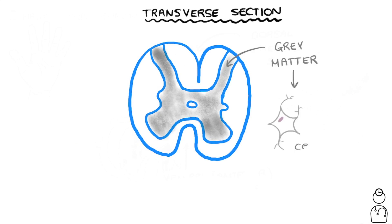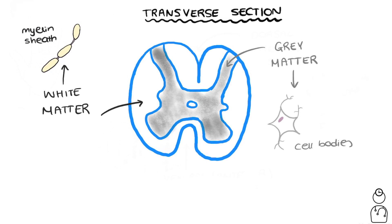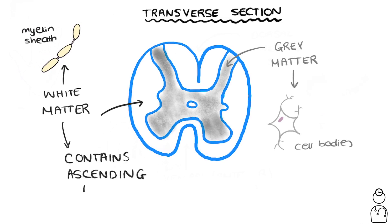The grey matter is made up of the cell bodies of nerve cells or neurons. The outer bit is known as the white matter, and this is made up of the fatty myelin sheets that cover nerve fibres. It's the white matter that contains the ascending tracts.